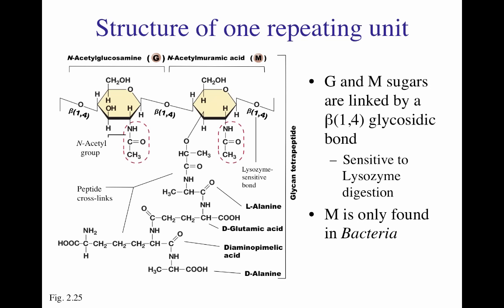Let's take a closer look at the structure of one repeating unit of peptidoglycan. N-acetylglucosamine is labeled with the G and N-acetylmuramic acid is labeled with the M. The glycosidic bond between the G and M sugars is linked by a beta-1,4 glycosidic bond, which is particularly sensitive to the enzyme lysozyme. Both sugars have the N-acetyl group. N-acetylmuramic acid is only found in bacteria and not in archaea or eukaryotes.